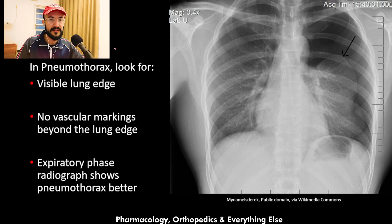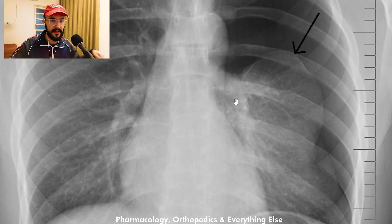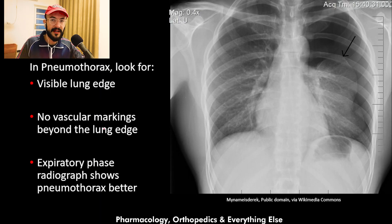When searching for a pneumothorax on a chest x-ray, start by looking over the lung fields for that lung edge. There is a left pneumothorax in this x-ray, and this is the lung edge you can see here. Basically the air is coming from outside, pushing the lung inward, and this is the lung edge as shown in a zoomed-in picture.